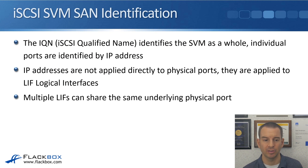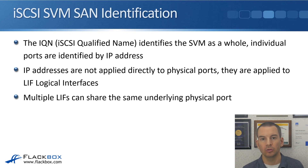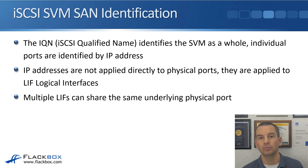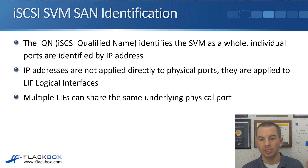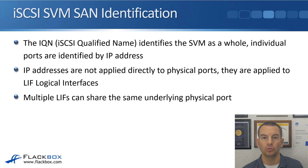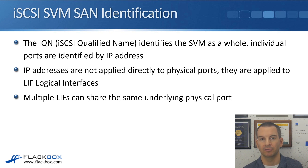Some details about iSCSI: the IQN is the iSCSI Qualified Name, and that identifies the SVM as a whole. In ONTAP, every separate SVM appears as a separate storage system to clients. So if you've got two different iSCSI SVMs, they'll look like two different storage systems and each will have their own separate IQN. Individual ports are identified by IP address, and IP addresses are not applied directly to physical ports — they're applied to logical interfaces, the same as with NAS protocols. Multiple LIFs can share the same underlying physical ports.